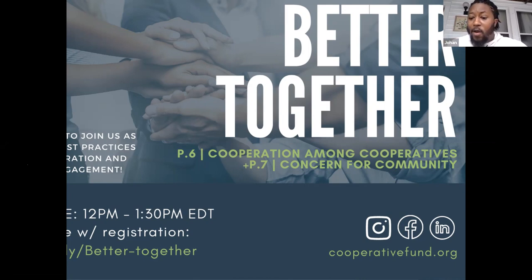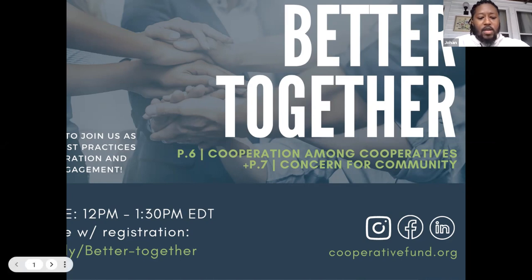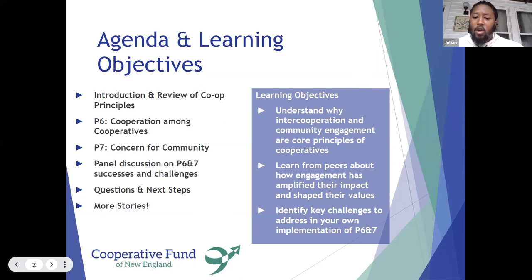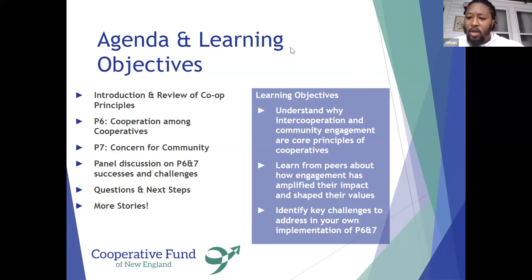Thank you so much to everyone for being here. As I mentioned earlier, we're diving into Cooperative Principles 6 and 7 today. We hope to review the principles a little bit before we get started, and then we'll hop on to our panel discussion where you'll hear from the folks we've gathered to share some of their experiences. Our learning objectives today are to understand why intercooperation and community engagement are core principles of the Cooperative Movement, and to learn from our peers about how this intercooperation and community engagement can be successful — or how we can amplify the impact of our work through leveraging these principles — and to identify key challenges to address in your own implementation.